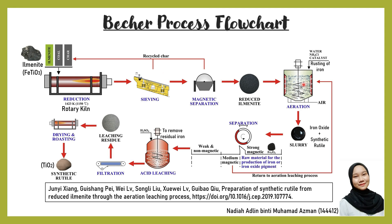Recovered char from both steps will be recycled back to the rotary kiln for the next batch. The reduced ilmenite then goes to the aeration process, also known as the rusting step. At this step, rusting of iron occurs. Ammonium chloride solution is added as a catalyst to accelerate the corrosion of iron. The resulting slurry contains iron oxide and synthetic rutile.